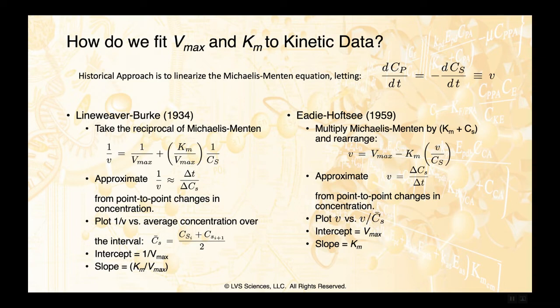So how do we go about fitting Vmax and Km if we don't have an explicit function of concentration as a function of time? The solution involves linearizing the Michaelis-Menten equation. We define this pesky derivative and just call it the velocity of the reaction, V.